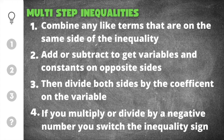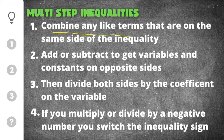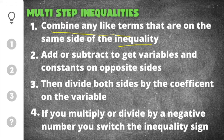There are four important things we need to remember when solving multi-step inequalities. The first one is that you're going to combine any like terms that are on the same side of the inequality. If a term has the same variable like x or y you will combine those together, and all constants are like terms which are just numbers. If there are any numbers on the same side you will combine them together.